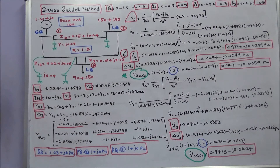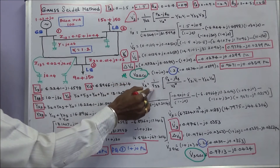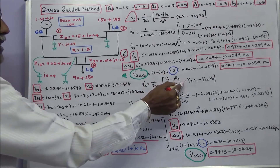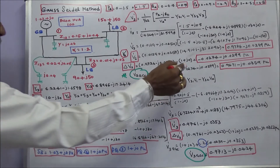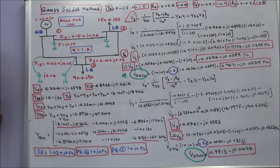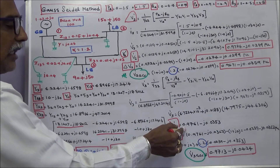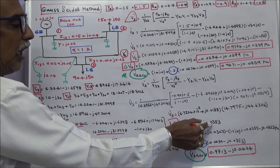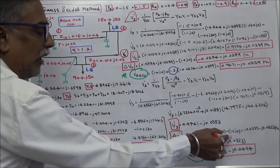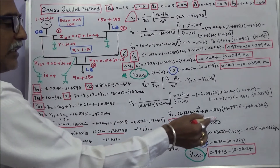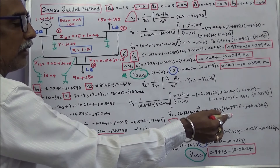Similarly, for V3: (1/Y33) × [(P3 minus jQ3) / V3* − Y31×V1 − Y32×V2]. Substituting all values, the first iteration V3 = 0.9761 minus j0.0353 per unit. The difference (calculated minus assumed) is minus 0.0239 minus j0.0353 per unit.